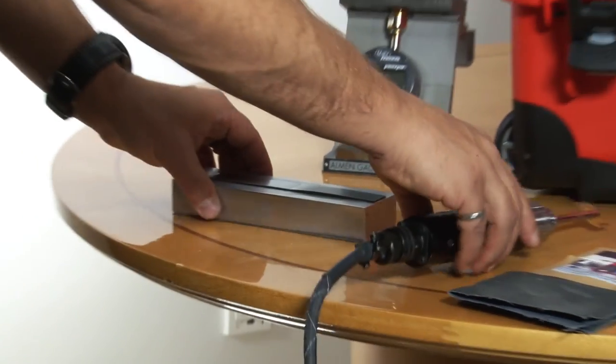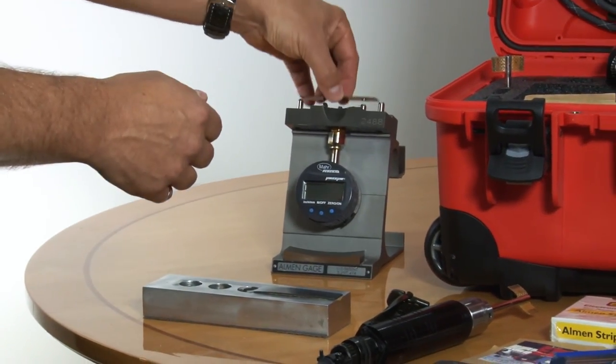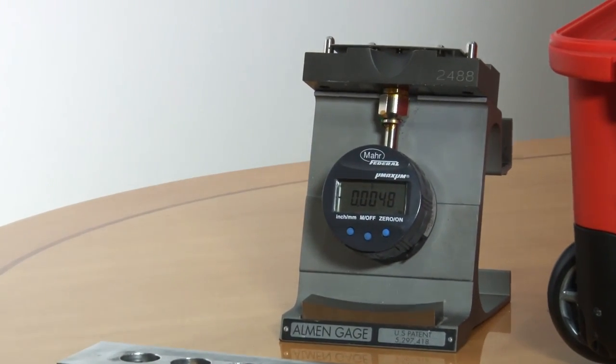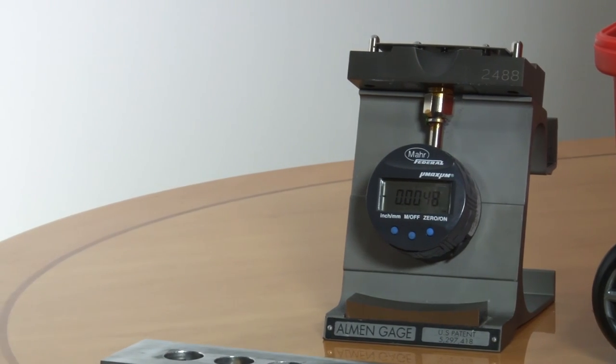When the time's up, you remove the almond strip from the block and put it on the gauge. In this case we're getting 4.8 thousandths of an inch archite for this first point.